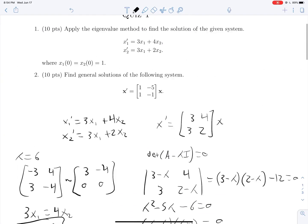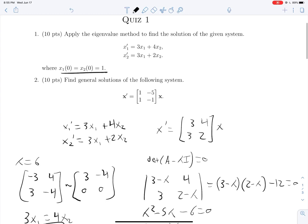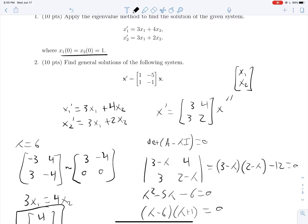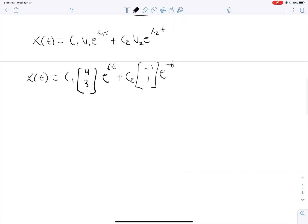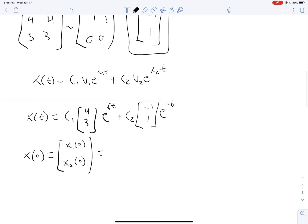Now, in order to find these c1s and c2s, we have to use these initial conditions here. Really, that's saying that just like we said that this x here could be broken down into this column vector x1, x2, like that, what we can do here is say that when t is equal to 0, so x at 0 is equal to x1 at 0, x2 at 0, and we're told from these initial conditions that both of these are 1. So this is 1, 1, and of course, x at 0 is equal to all of this when we plug in 0 for t. So we get c1, 4, 3, plus c2, negative 1, 1. Perfect.